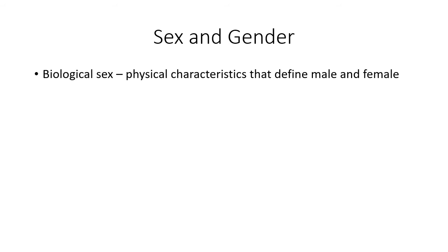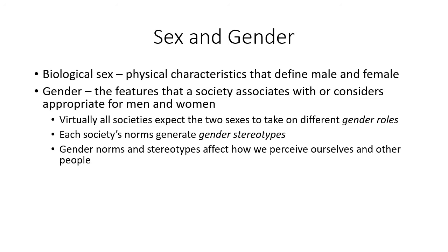Now let's talk about sex and gender — there is a difference between the two. Biological sex refers to our physical characteristics that define male and female: XX or XY chromosomes, or all of those genetic variations we discussed. Gender, on the other hand, is related more to society and culture — it's the features that a society associates with or considers appropriate for men and women, also referred to as maleness and femaleness.